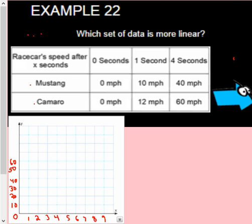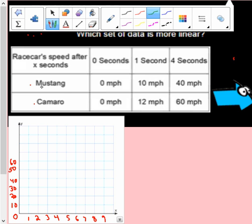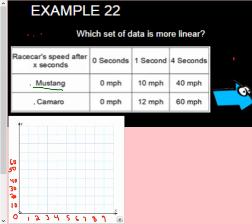So let's look at the Mustang first. Mustang has one at 0, 0. After one second, it's going 10 miles an hour. After four seconds, it's going 40 miles an hour.